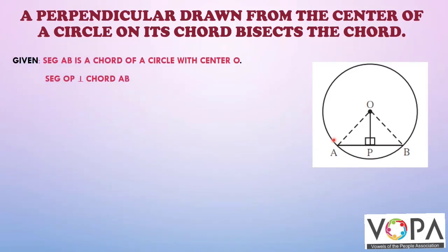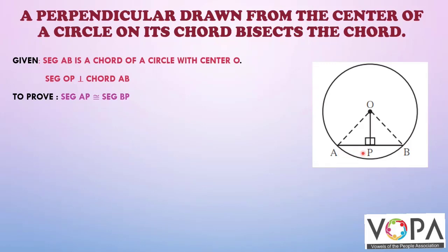Given: segment AB is a chord of a circle with center O. O is the center. Segment OP is perpendicular to chord AB. To prove: segment AP is congruent to segment BP.